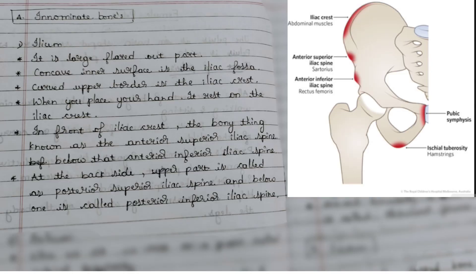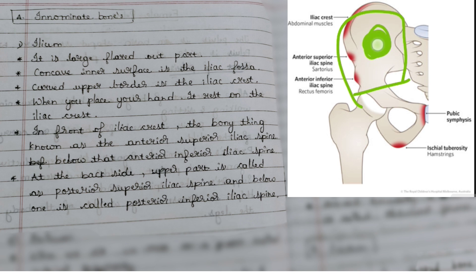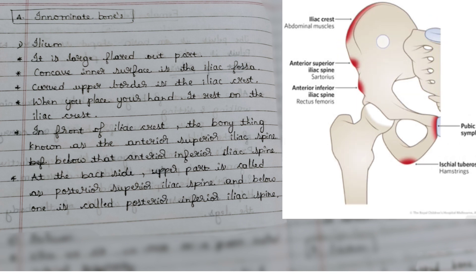In the innominate bone, the ilium covers the majority of the area, so it is a large, flared-out part. It has a concave inner surface called the iliac fossa. This concave inner surface is called the iliac fossa, and the curved upper border is called the iliac crest.